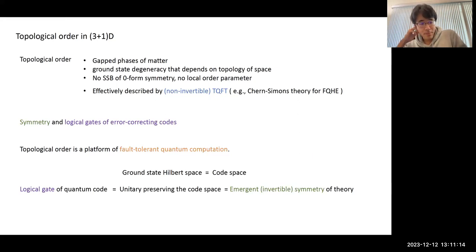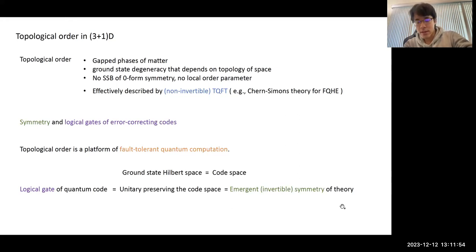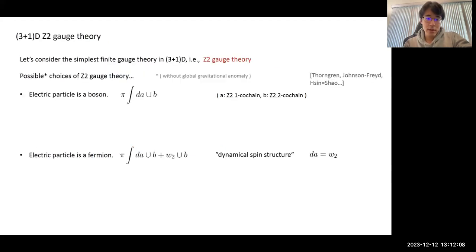We can regard the global symmetry of the topological order states as a unitary operation which preserves the ground state Hilbert space — that is, it preserves the code space. So this emergent symmetry can be regarded as logical gates of the quantum code. A logical gate is a unitary operation acting on qubits which is necessary for performing explicit quantum computation. There is a correspondence between logical gates of the quantum code and the emergent symmetry of the theory.